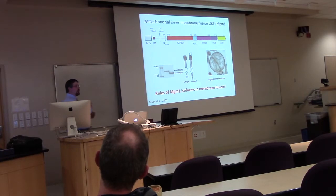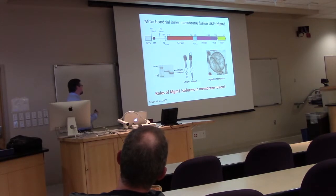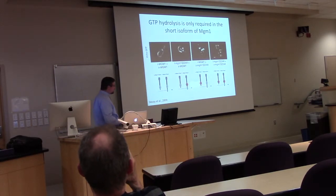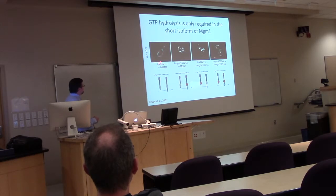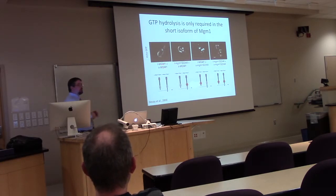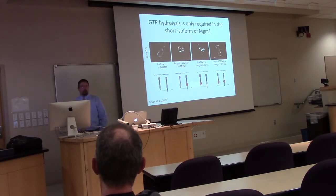When you mutate MGM1, you see septated membranes — the outer membrane has fused but there's a failure of fusion of just the inner membrane — showing a role for both isoforms in inner membrane fusion. Using yeast as a model system with matrix-targeted GFP, you can visualize mitochondrial networks. With engineered long and short isoforms introduced separately, you only get a reticular network when both are present together; each alone gives a fragmented network. So both isoforms are required for mitochondrial fusion.